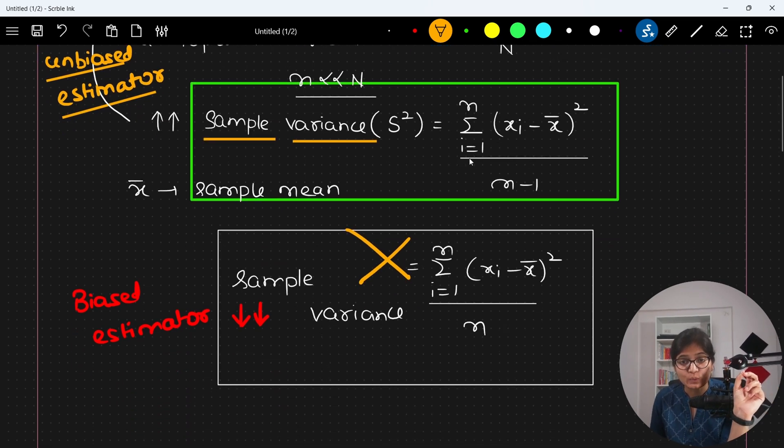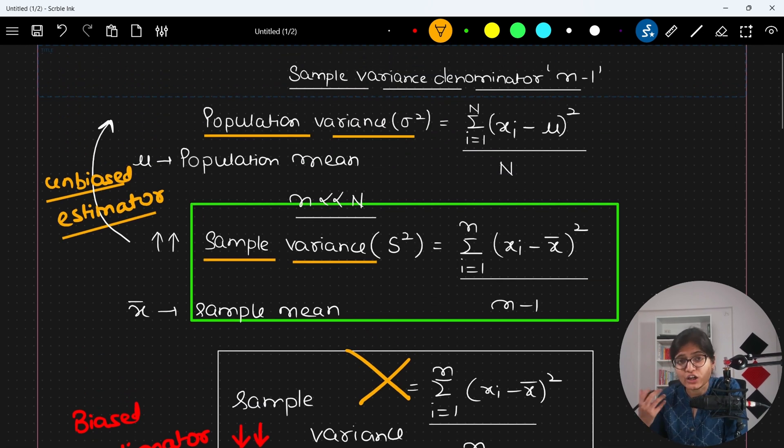So I hope that this video will give you a clear cut picture of why a sample variance denominator is N minus 1 and not N. And I hope that in future, if you will solve any question or if in an interview, someone will ask you this question, now you will be clearly able to answer this particular part.